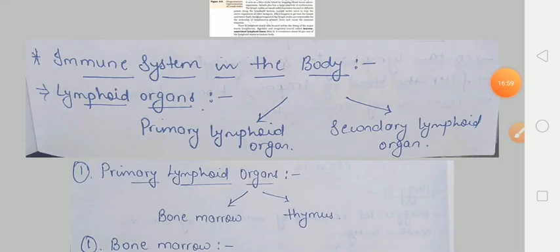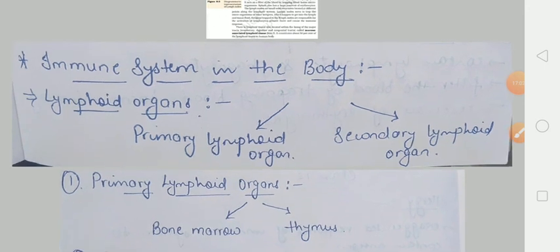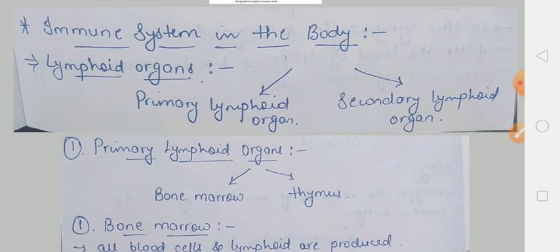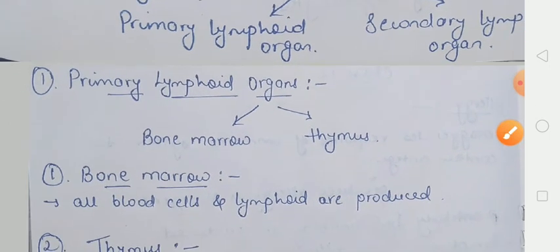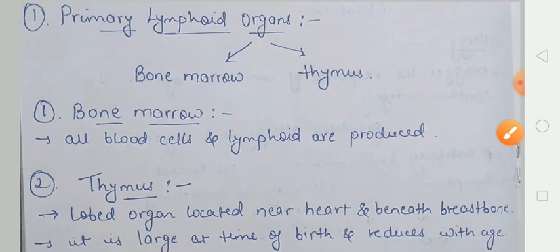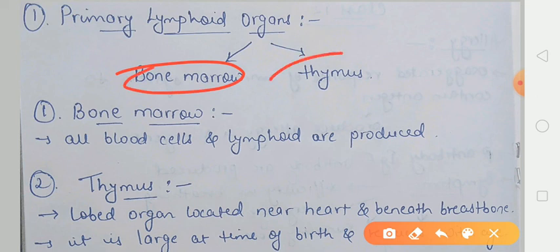Toh ek baar hum log ab dubara se revise kar lete hain ki humne abhi tak kya-kya padhay? Sabse pehle humne padha hai immune system ke baare mein, aur usmein bhi particularly lymphoid organs ke baare mein. Toh lymphoid organs kitne hain? Do. Pehla hai primary lymphoid organs, aur doosra hai secondary lymphoid organs. Jo primary lymphoid organs hain, voh kitne hain? Do hain — that is bone marrow and thymus.